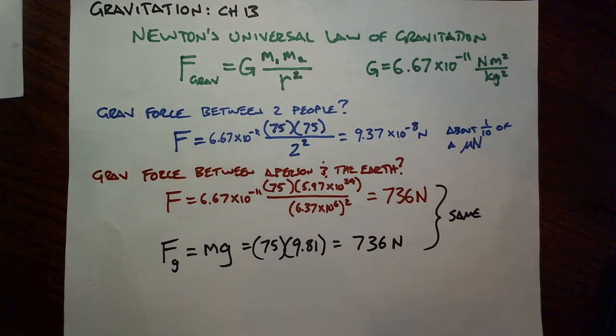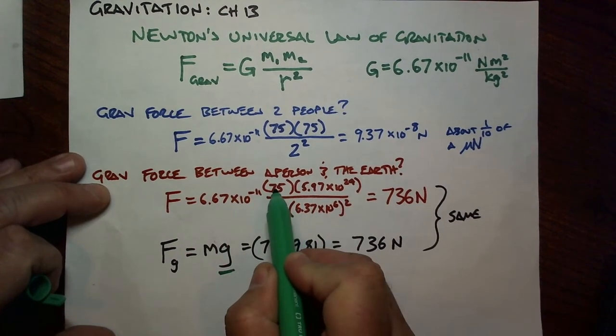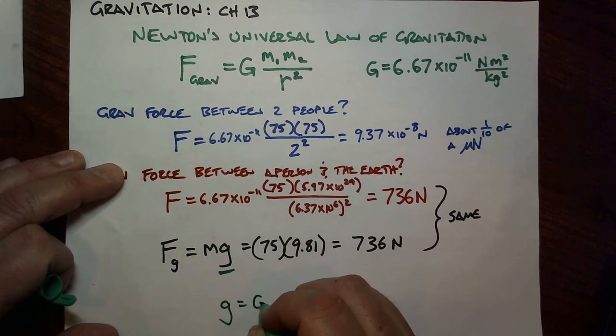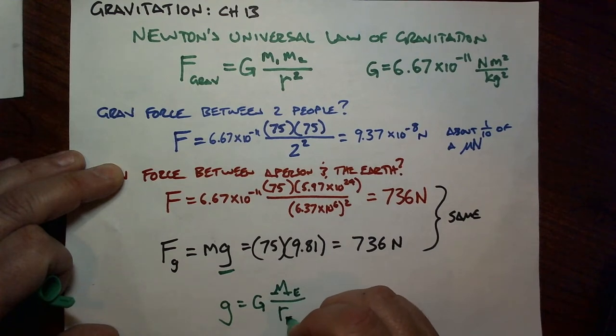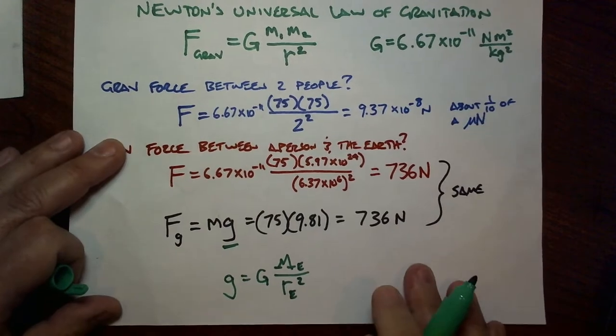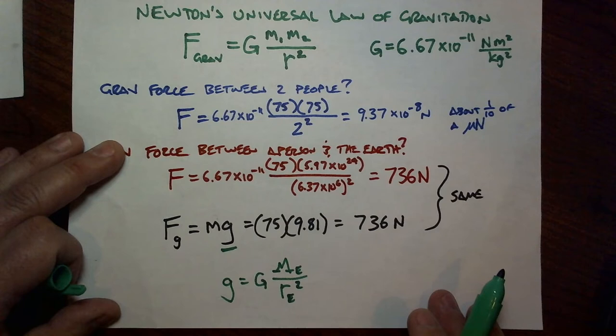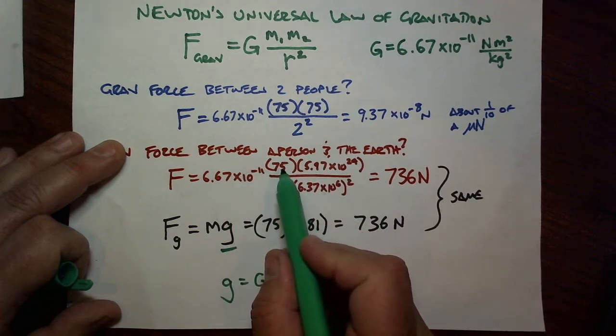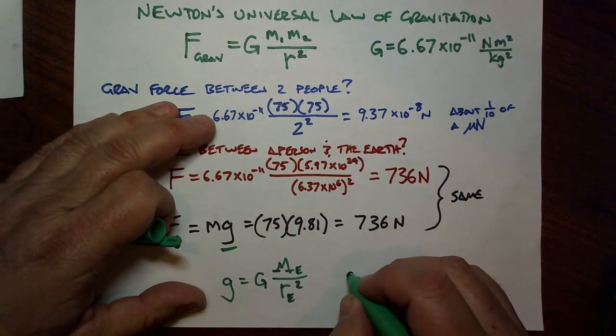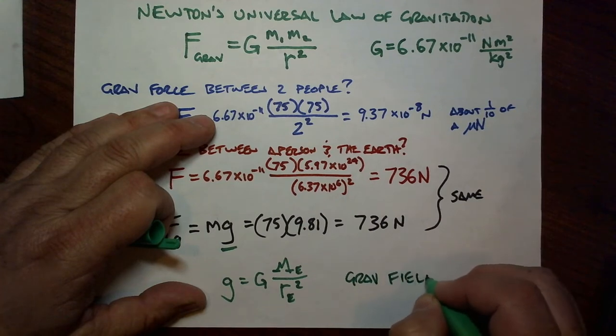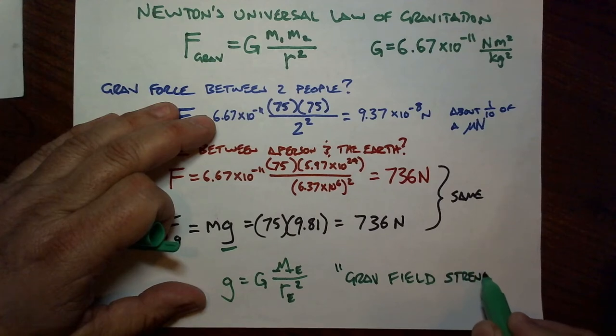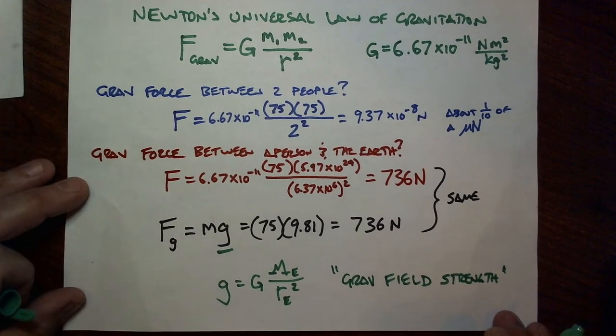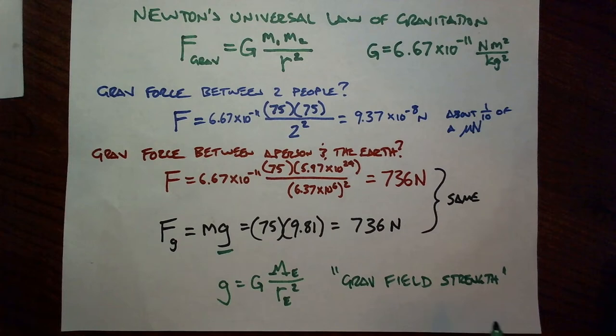That means that this lowercase g here must be everything out of this equation except for the 75. So g is capital G, mass of the Earth, divided by radius of the Earth squared. So you could find the g for any other planet if you knew the mass of the planet and its radius squared. So g is an acceleration due to gravity, but it's really everything in the force equation except for the mass of the individual person that you're interested in at that moment. That makes g not an acceleration due to gravity, but really a gravitational field strength.